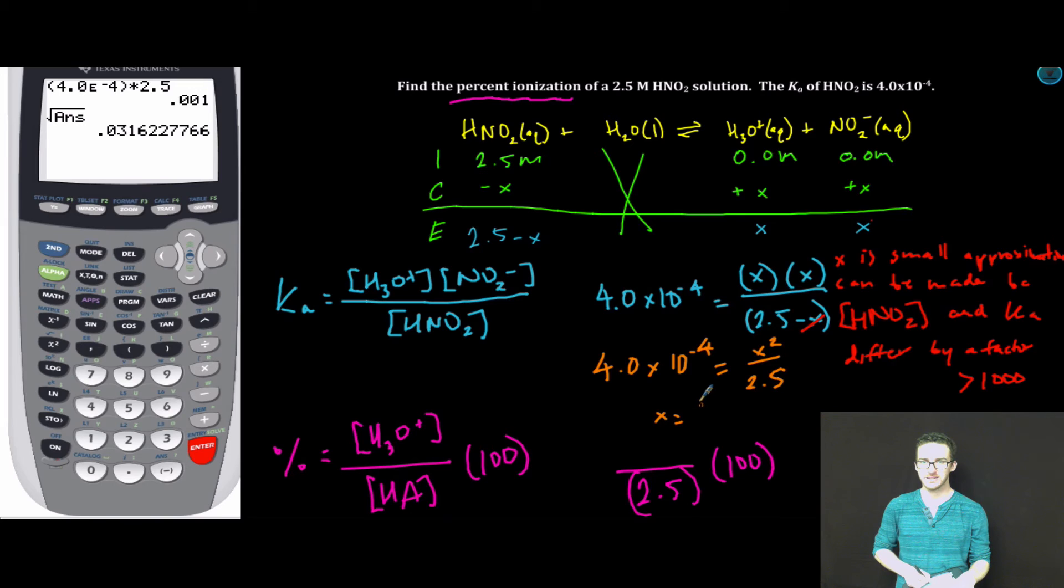Jump to our calculator. x equals 0.032 molar. Remember, that's my concentration of hydronium ion.